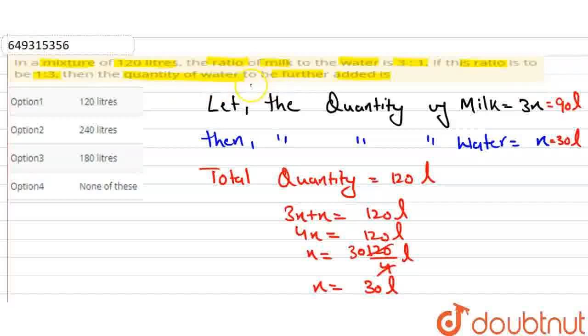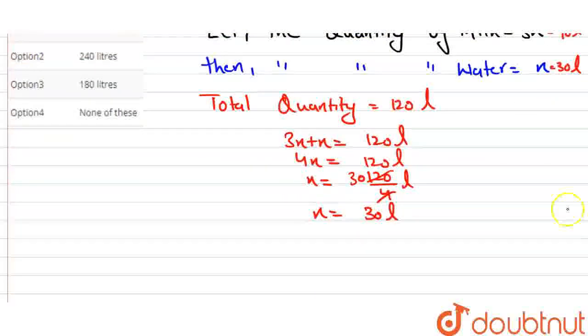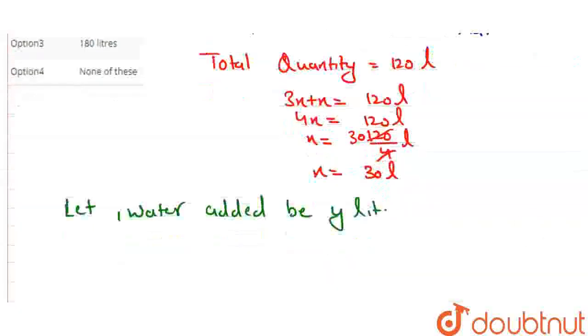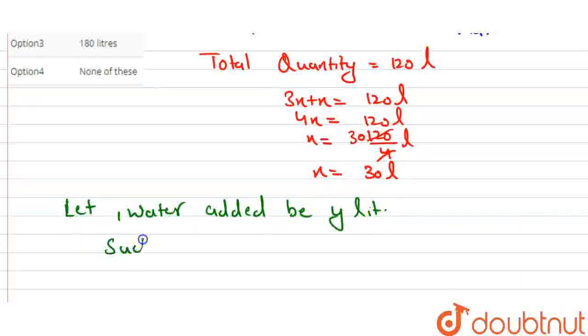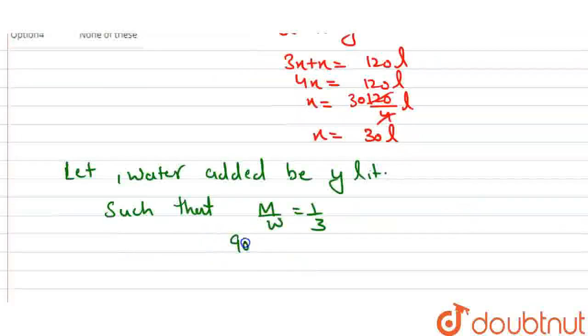Let water added be y liters. We will add water such that the milk to water ratio becomes 1:3. The milk is 90 liters and water was 30 liters. Now we will add y liters to make the ratio 1:3.